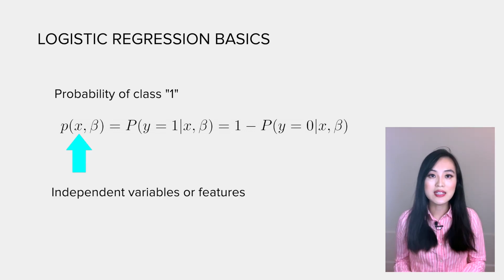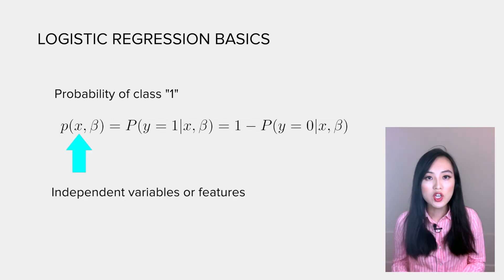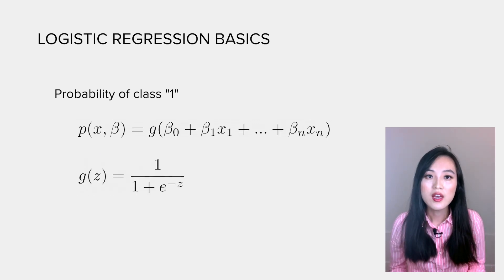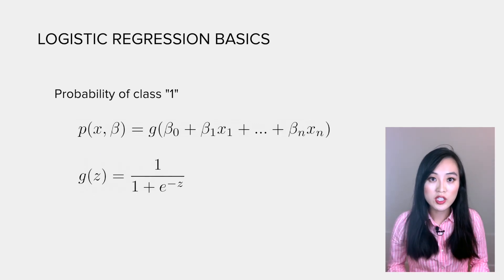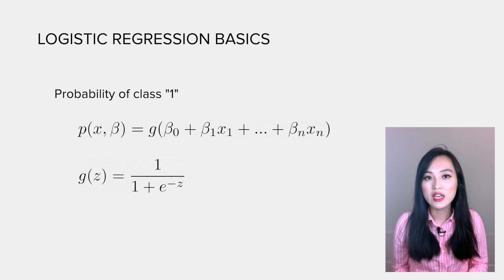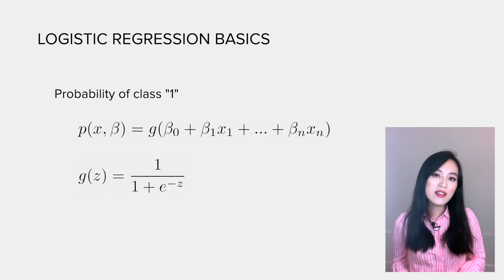x represents independent variables. In machine learning, we call them features. Beta are the parameters. P(x, beta) equals the logistic function g of a linear combination of features, where logistic function g(z) equals 1 over 1 plus e to the negative z.